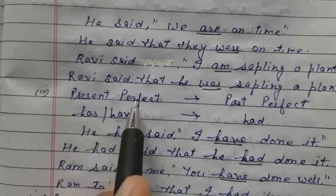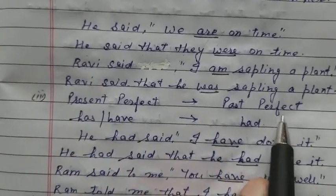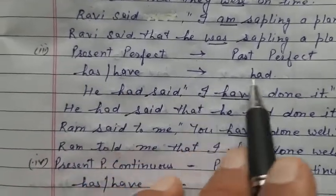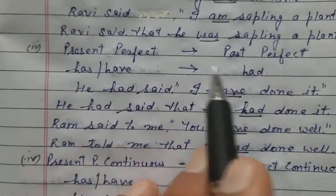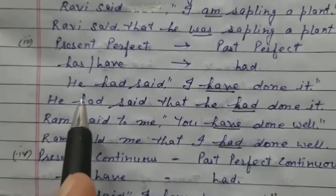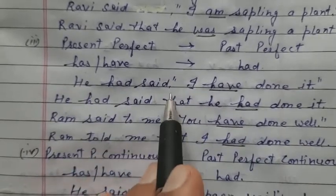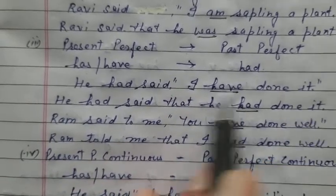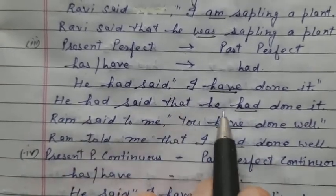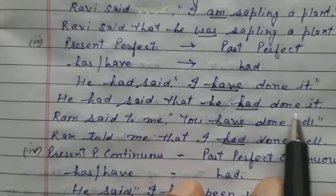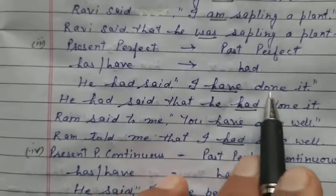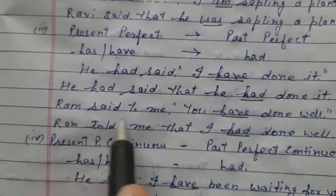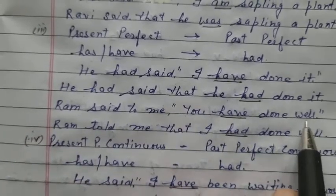Next, present perfect tense changes into past perfect. It means has or have changes into had. For example: 'He said I have done it' changes to 'He said that he had done it.' Have changes into had; the verb remains in the third form. 'Ram said to me you have done well' — Ram told me that you (change to I) had done well.